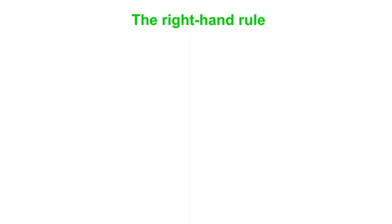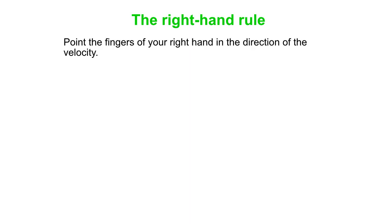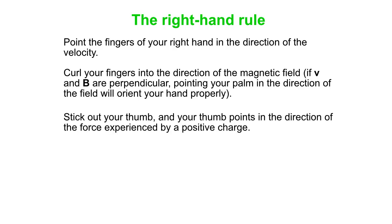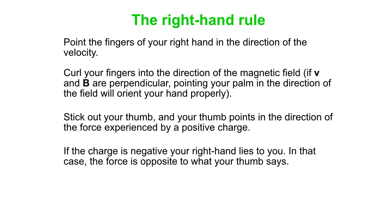Summary of the right-hand rule: point your fingers on your right hand in the direction of the velocity, then curl your fingers into the direction of the magnetic field, or point your palm in the direction of the field to get your hand going the right way. Stick out your thumb — your thumb points in the direction of the force experienced by a positive charge. If you have a negative charge, your right hand lies to you, so just take the opposite direction.